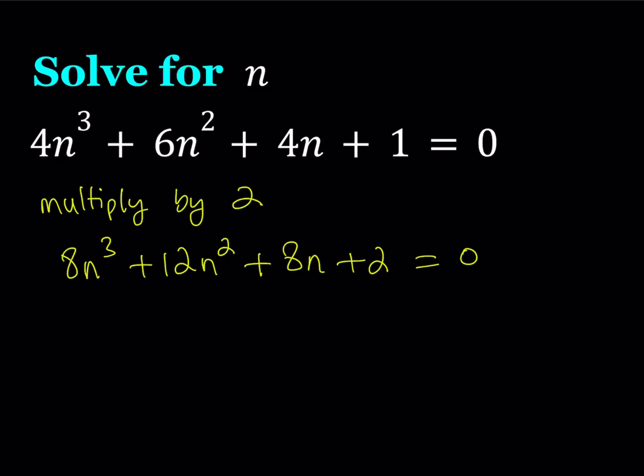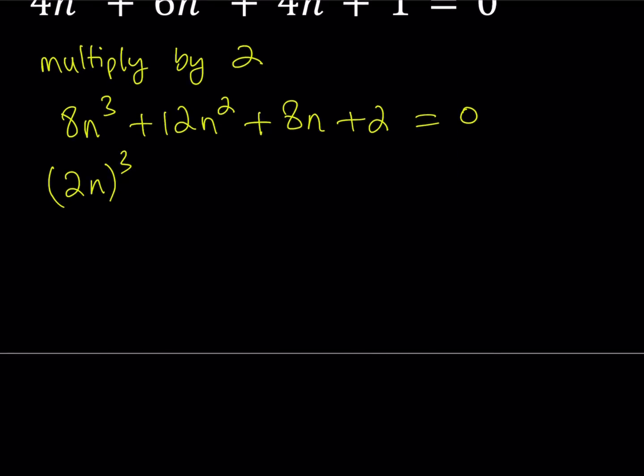That's going to give me 8n³ + 12n² + 8n + 2 = 0. Since multiplying by 2 doesn't really change the roots, the roots of this equation are going to be the same as the original one. Notice that 8n³ can be written as (2n)³.